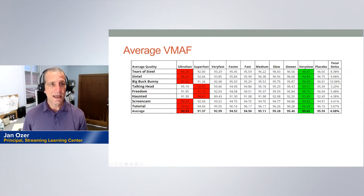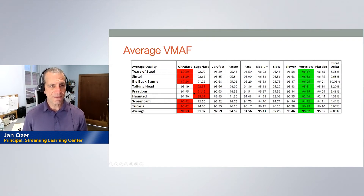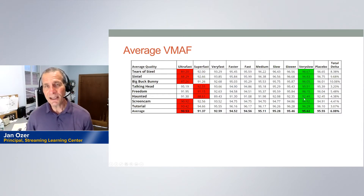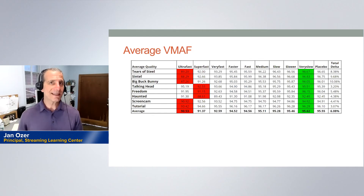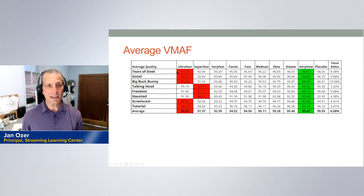This chart shows average VMAF with x.264 presets — red is bad, green is good. In terms of average quality, ultrafast and superfast give the worst quality, while very slow and non-placebo give the best in all cases. Interestingly, placebo actually gives lesser quality than very slow while taking significantly more time. The total delta between the best and worst presets is only about 6%, though the difference between 89 and 96 VMAF is something most viewers would notice.